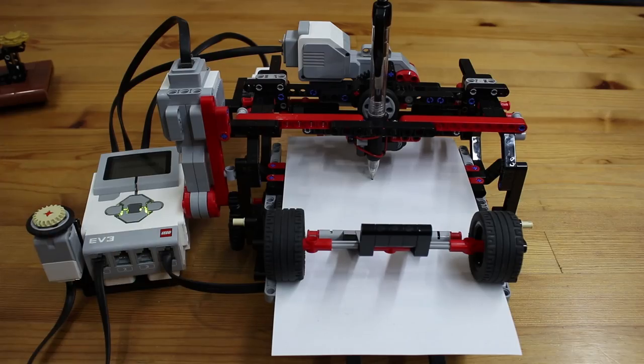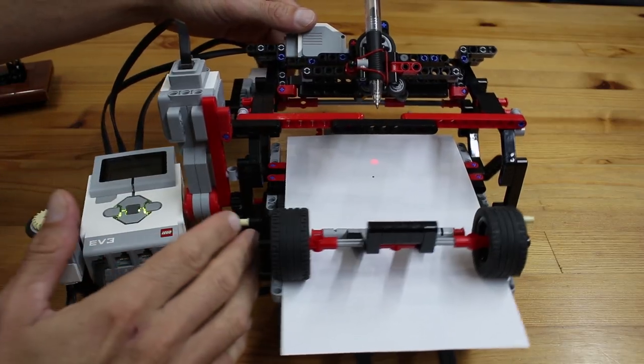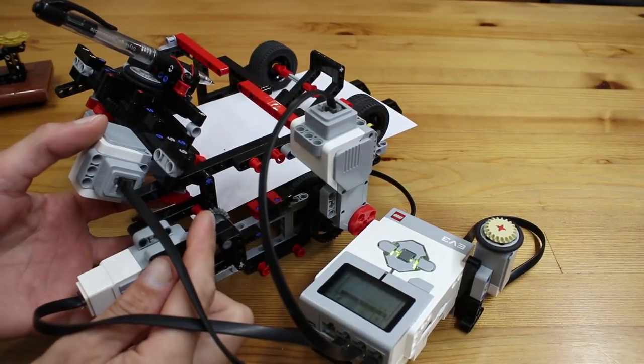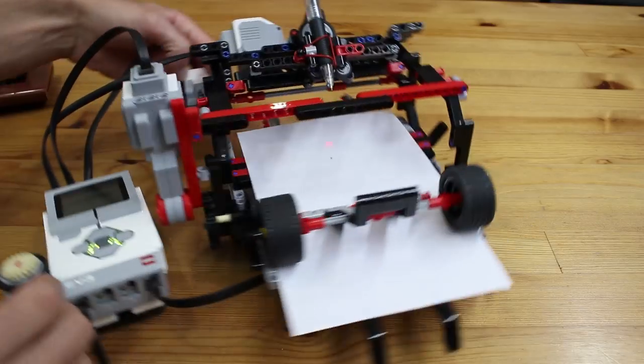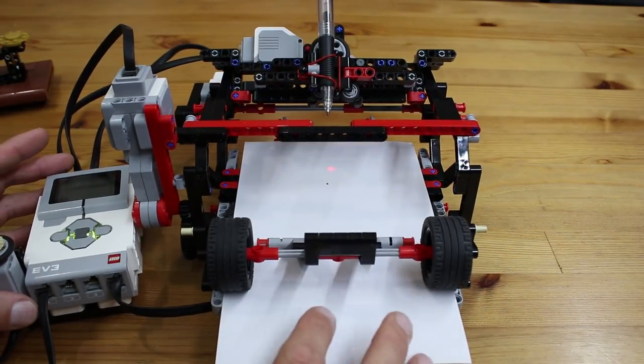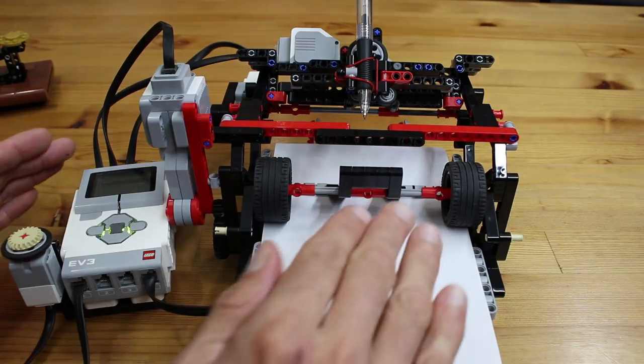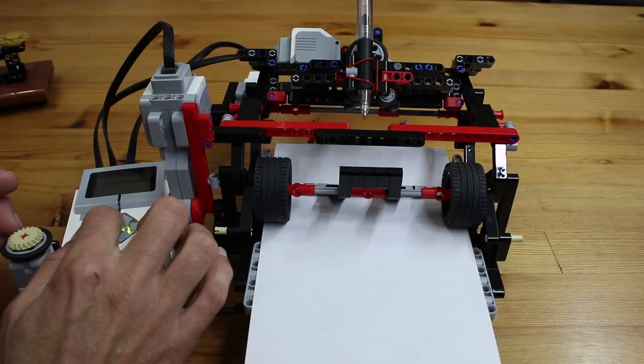Now that we have the pen roughly positioned where we want it, we need to calibrate the printer. We're going to raise the pen to its highest position and re-engage the motor that controls the pen height by sliding that 24-tooth gear back onto the worm gear. We're going to make sure there's a piece of paper in the printer and move this bar to its forward position to keep the paper flat on the printing bed, and then we're going to run the calibrate program.